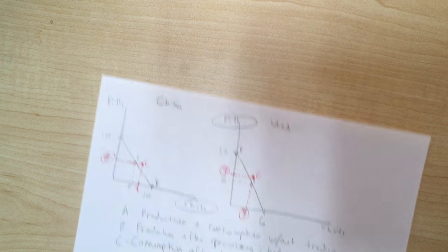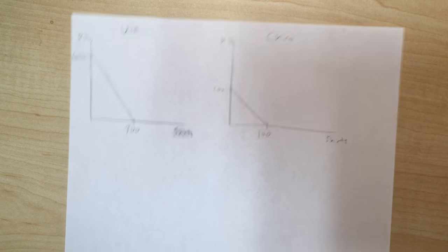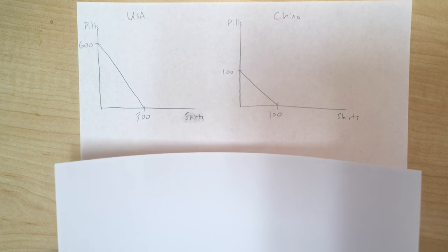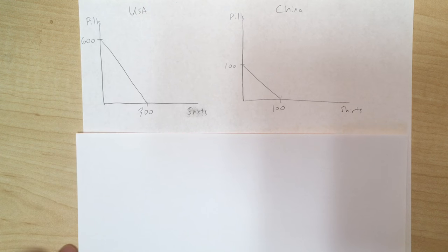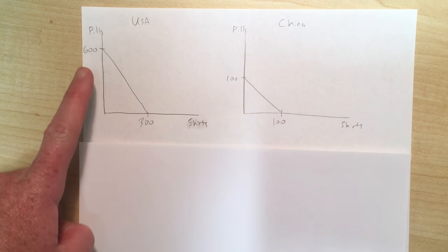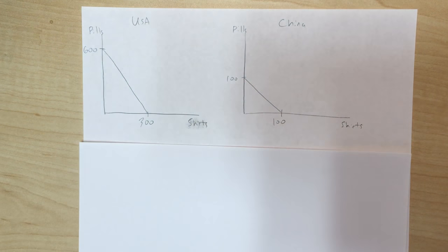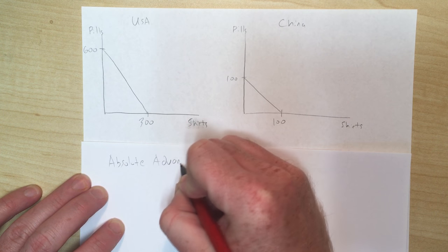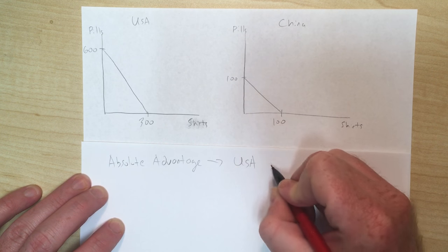Let's move on to another example that's a little different and more realistic. We've got the same two countries, but this time the US can produce 600 pills or 300 shirts, while China can produce 100 of either. What that means is the absolute advantage goes to the USA for both goods.